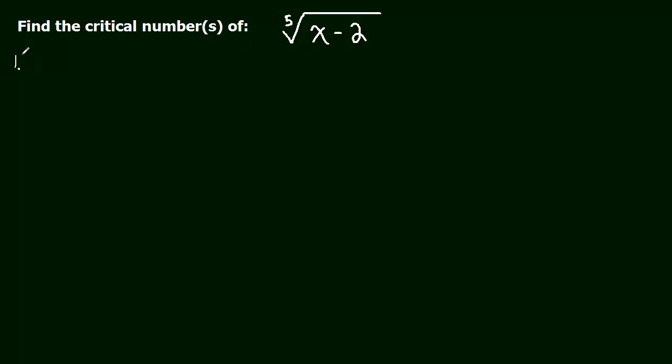And you'll see why afterwards. Okay, so the first thing I'm going to do is take the derivative. But to do that, I want to rewrite the function into a form that we can work with. So this is really x minus 2 to the one-fifth. Then I'm going to take the derivative. So f prime of x is equal to one-fifth x minus 2 to the negative four-fifths. One-fifth minus 1 is negative four-fifths.